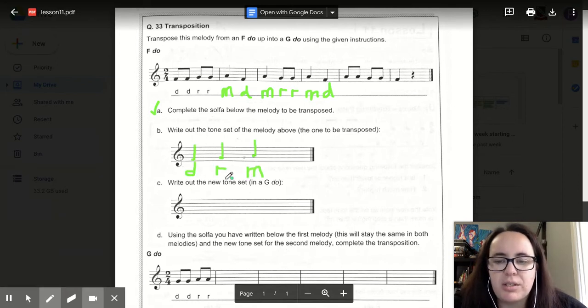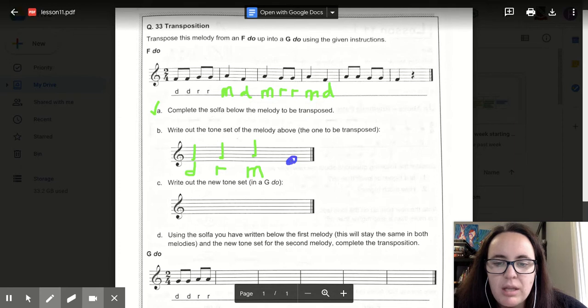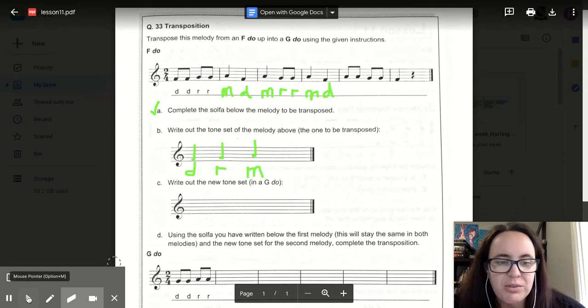So here is our tone set for this melody in F DO above. It is crucial when you are writing on the stave that you are very particular and neat about where you are putting your sounds. If your sound kind of looks like this, then it is not in one particular place on the stave. And that is no help when you're a musician trying to read your music. So make sure you are absolutely particular about where you're putting your sounds.